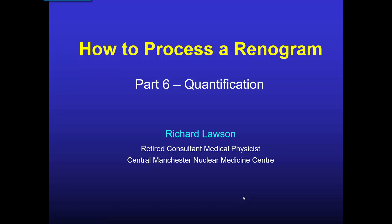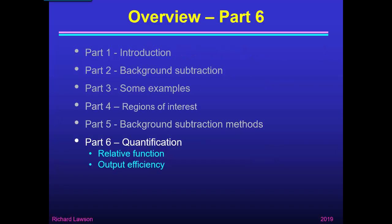This is the final part of my talk about how to process a renogram. In part 1 I gave an introduction and explained what a renogram is. In part 2 I explained the importance of background subtraction and showed how to see when it's been performed correctly. In part 3 I gave some real examples of different background subtraction methods. In part 4 I discussed how to draw the necessary regions of interest. In part 5 I described the recommended background subtraction methods. So now in part 6 I'm going to talk about how we quantify the results.